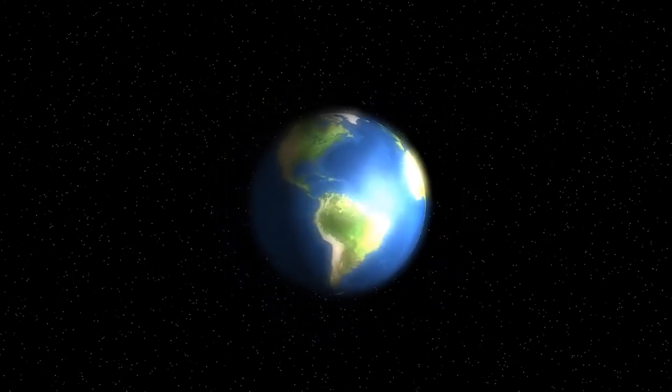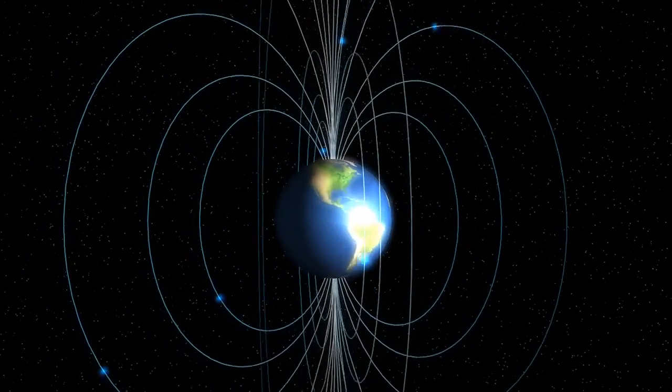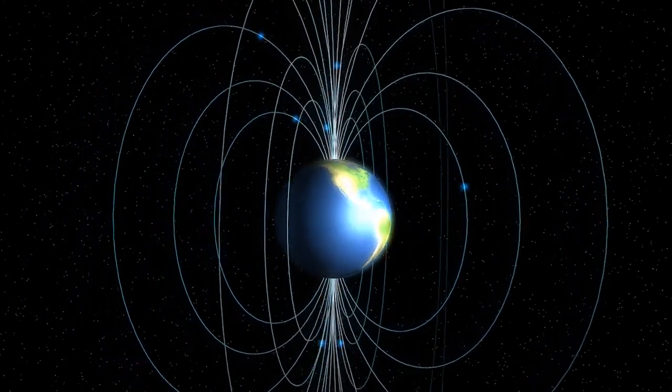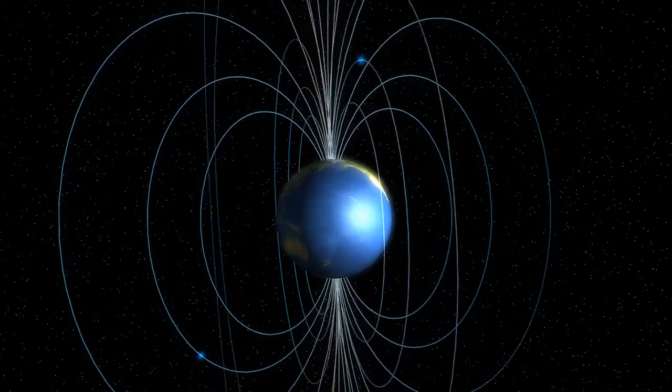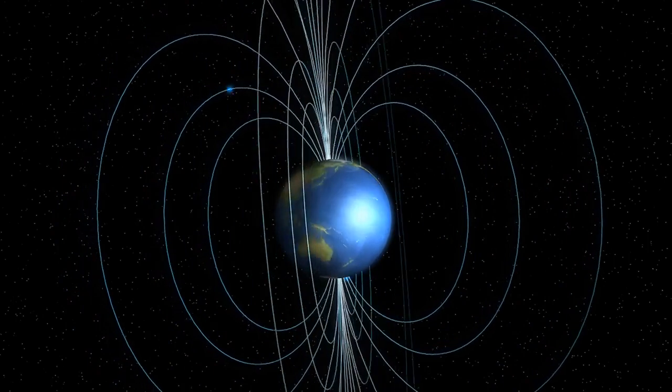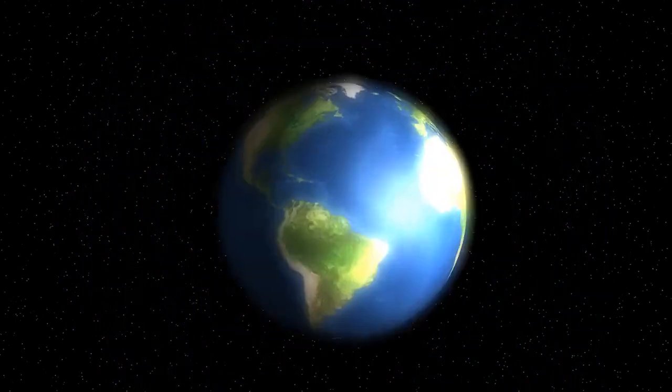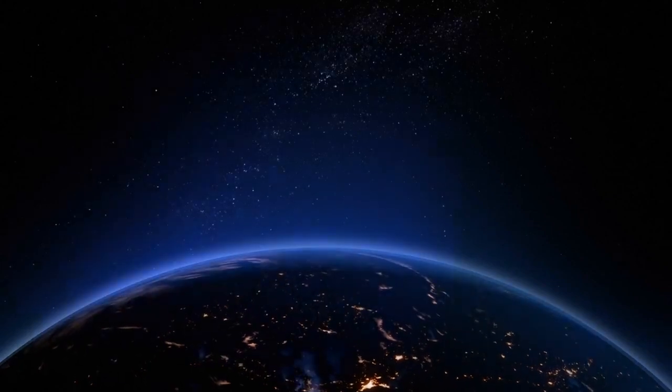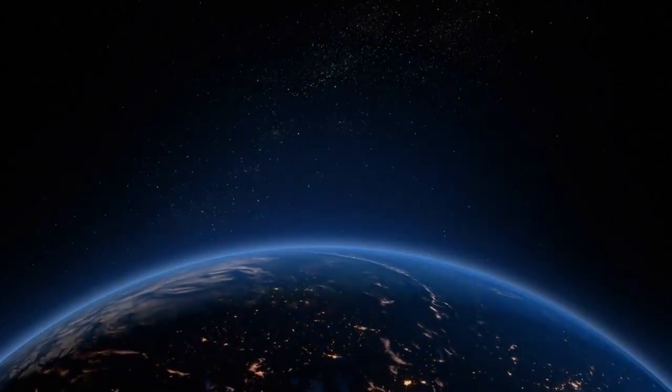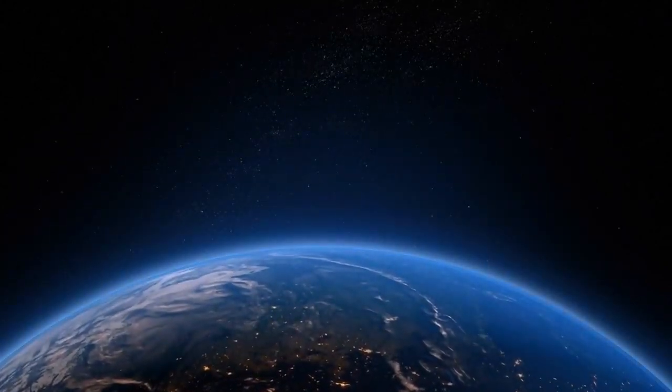If Earth were to lose its magnetosphere, the consequences would be catastrophic and far-reaching. The magnetosphere plays a vital role in safeguarding our atmosphere and preserving life as we know it.